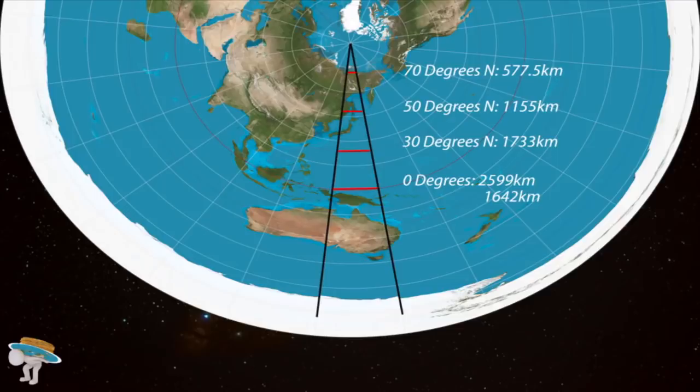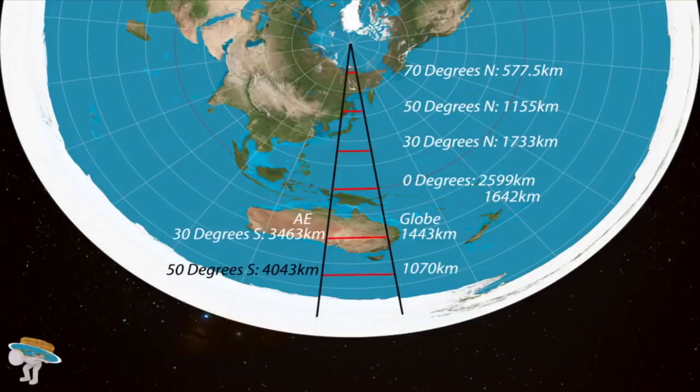This is what these distances look like. At 30 degrees, we have a 2,000 kilometer gain. At 50 degrees, we have a 3,000 kilometer gain. And at 70 degrees, we have over 4,000 kilometer gain. Much of this land is out to sea or in the fictitious land of Antarctica.